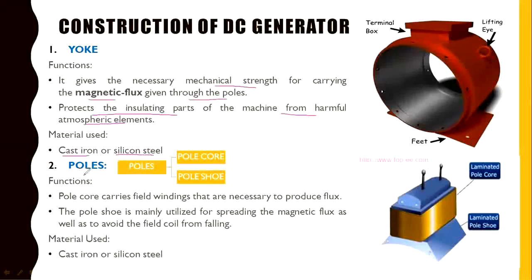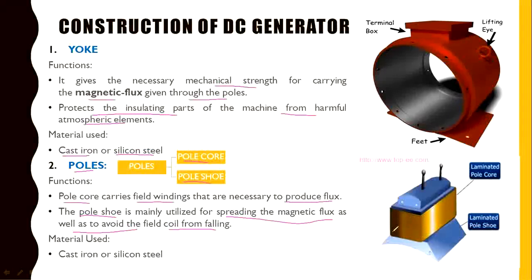The poles are divided into two parts: the pole core and the pole shoe. The pole core carries the field windings that are necessary to produce the flux. The pole shoe spreads the magnetic flux and also provides mechanical support to the field winding so it doesn't fall, allowing maximum flux to link with the armature winding. The same materials — cast iron or silicon steel — are used for the poles.